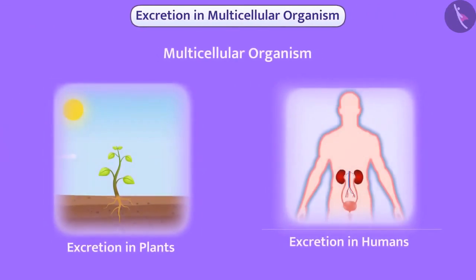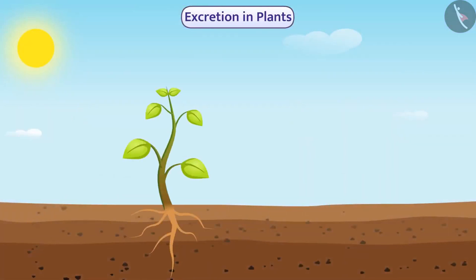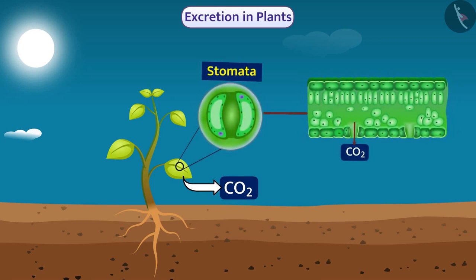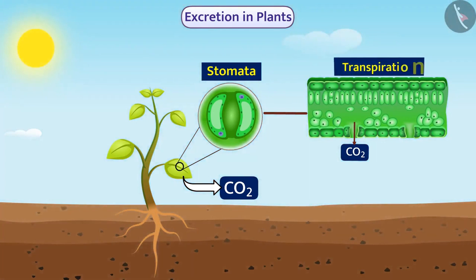Multicellular organisms have specific organs for excretion. In plants, during the process of photosynthesis, waste materials oxygen and water get produced. There is no photosynthesis at night, so carbon dioxide is produced as a waste product. These products are removed through stomata present in the leaves.